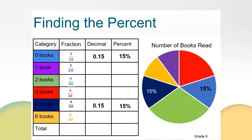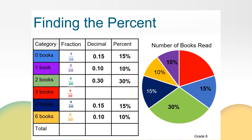Let's look at the fraction of students that read 2 books — this is the largest category. 6/20ths is equivalent to 30 hundredths and 30%. We can see that this is the largest part of the circle graph. The last section we need to determine is the decimal and percentage for students that read 3 books. 4/20ths is equivalent to 1/5th, which is the same as 20 hundredths or 20%. 20% of the class read 3 books.